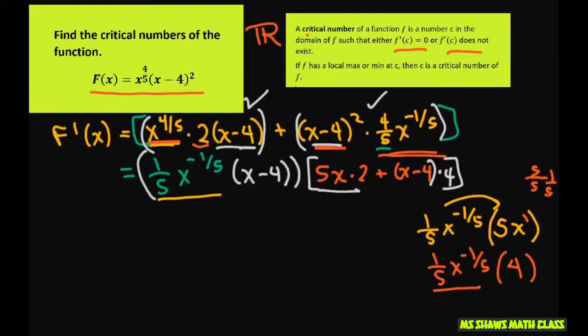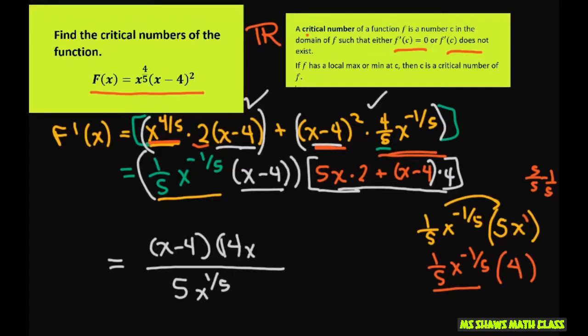If you notice, what happened is I don't have any exponents except at the beginning, and this is to the negative one-fifth. So that now goes to my denominator. So now this is really 5x to the one-fifth. And the numerator is going to end up being x minus four, and this part right here, if you simplify that, you're going to get 14x minus 16.